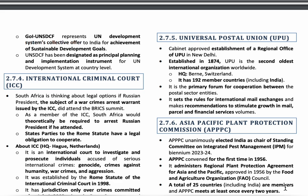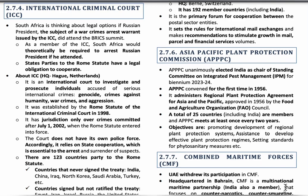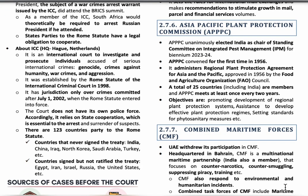The Universal Postal Union (UPU) is the second oldest international organization, established in 1874. It has 192 member countries including India, and its headquarters is located in Switzerland. Its main objective is to set rules for international mail exchanges and to make recommendations to stimulate growth in mail, parcel, and financial services. In June, the Indian cabinet approved the establishment of the UPU's regional office in Delhi.